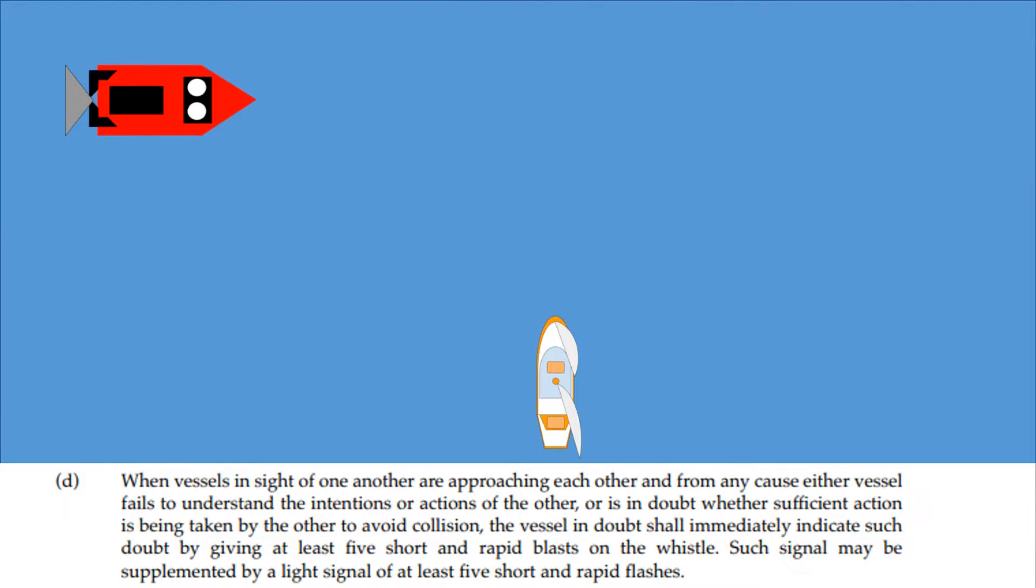When vessels in sight of one another are approaching each other and from any cause either vessel fails to understand the intentions or actions of the other, or is in doubt whether sufficient action is being taken by the other to avoid collision, the vessel in doubt shall immediately indicate such doubt by giving at least five short and rapid blasts on the whistle. Such signal may be supplemented by a light signal of at least five short and rapid flashes.